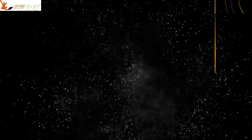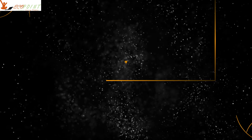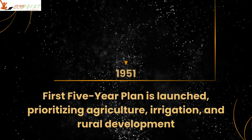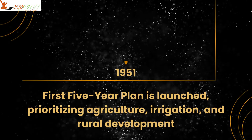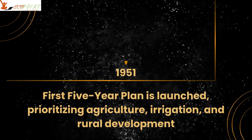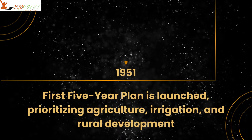In 1951, the first five-year plan was launched. The main focus was on agriculture, education, and rural development.